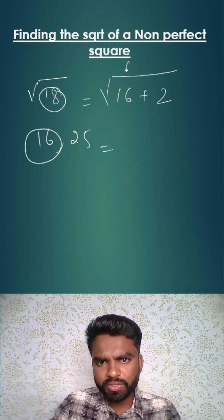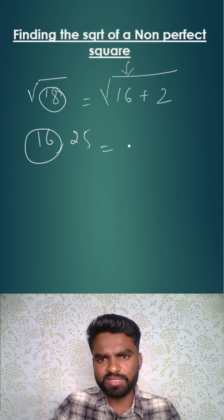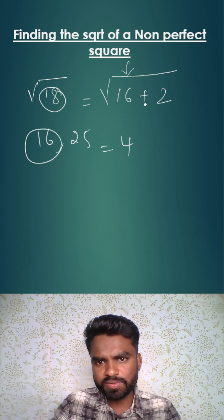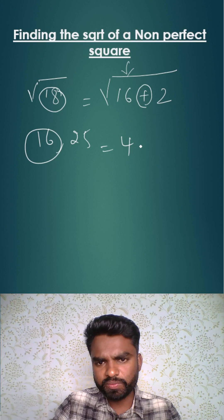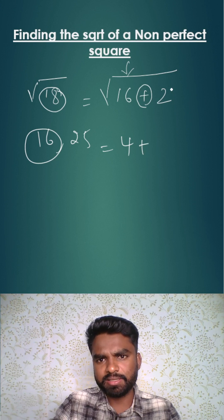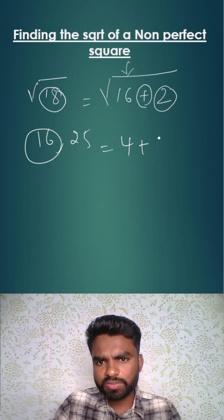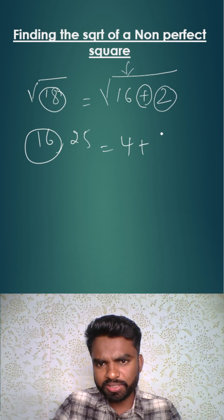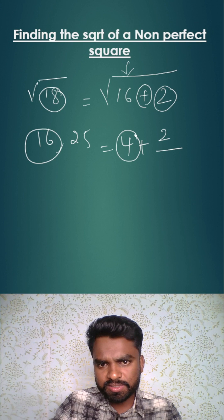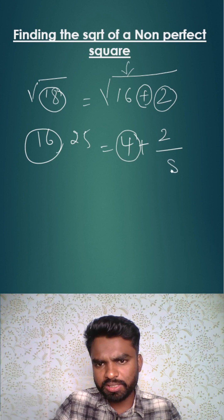In the next step you will write square root of 16. What is square root of 16? It's 4. So we have plus here. Then we have 2 here. So here we will be writing a fraction with numerator as 2 and denominator as 2 times this number. So 2 times 4 is 8.